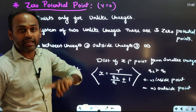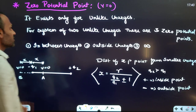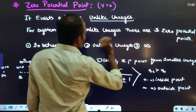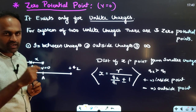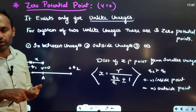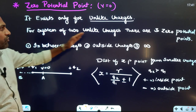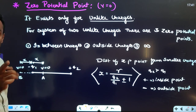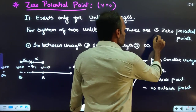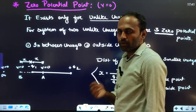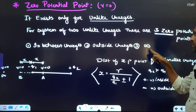Zero potential point exists only for unlike charges — not for like charges. For like charges, you get positive or negative potential depending on which charge dominates. For unlike charges — one negative, one positive — there will be three zero potential points: one in between the charges, one outside the system, and one at infinity.